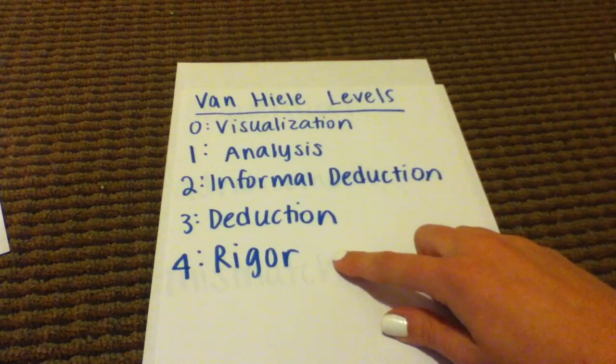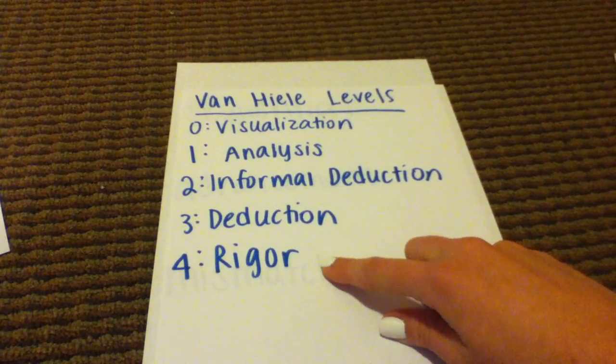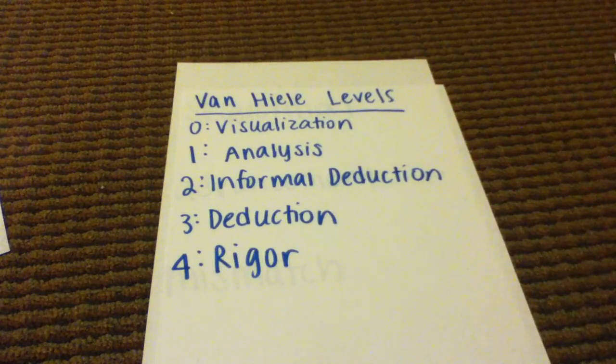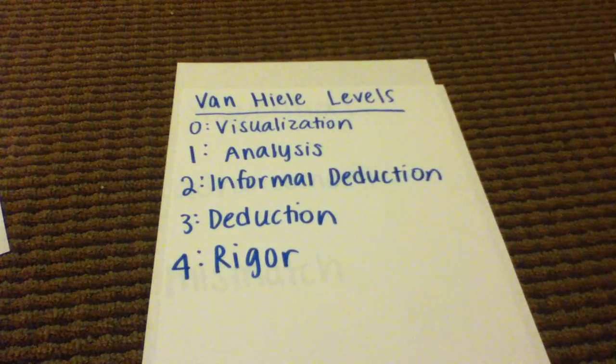The last level in the Van Hiele model is level four: rigor. This level is usually reached at the university or college level.